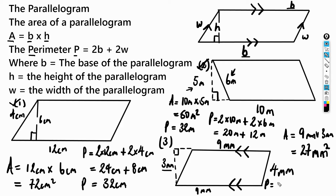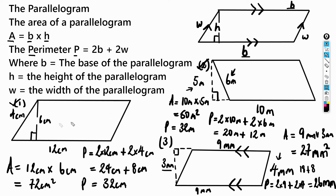For the perimeter of number three: 2 times the base (2 × 9 mm) plus 2 times the width (2 × 4 mm) gives 18 plus 8, which equals 26 millimeters. So we've now found the area and perimeter for all three parallelogram examples.